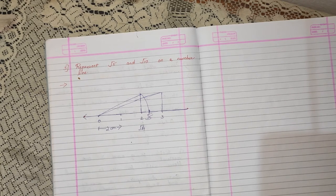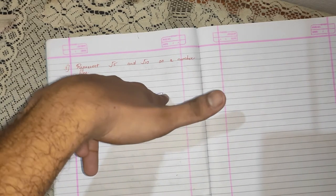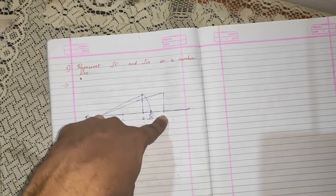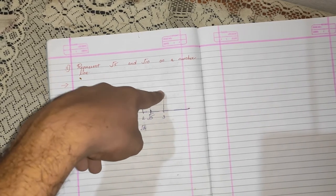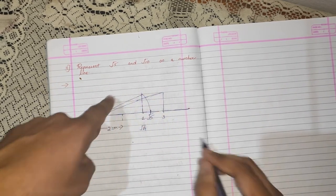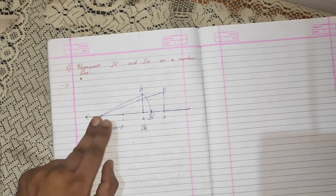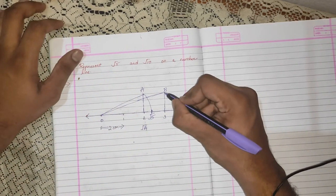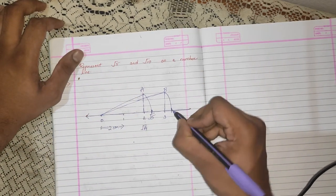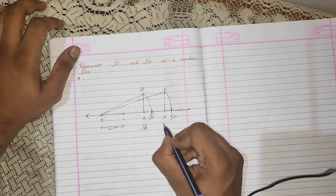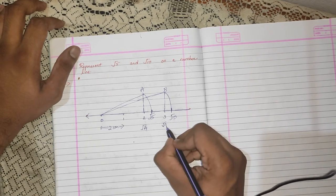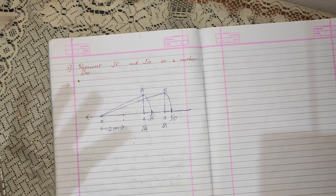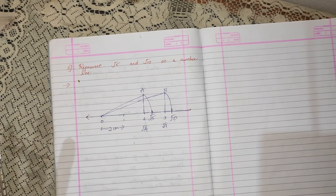Similarly, I take the pencil and rounder and point from 0 to 3. This measurement is root 9. For 3, the measurement is root 9. If I keep the pencil at point B and drag it down, I will get the same kind of depression and get a point. This point is root 10, as the value of root 9 is 3, so the next point I get is root 10. This is how I represent numbers root 5 and root 10 on a number line.